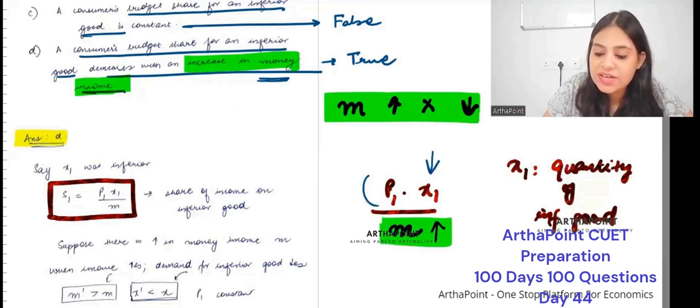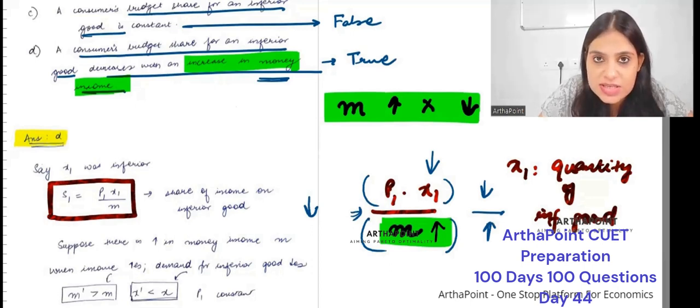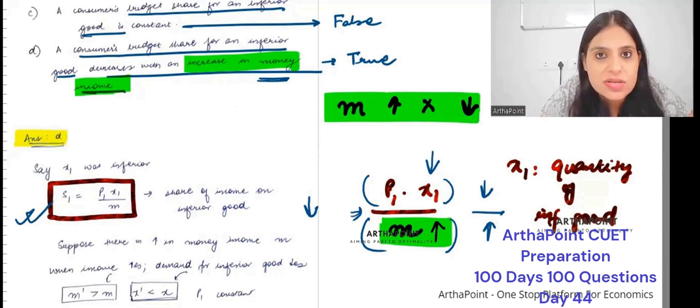So overall numerator is decreasing. Denominator is increasing. What will happen to the fraction? It will decrease. If the fraction decreases, this fraction was the share, the share also decreases.